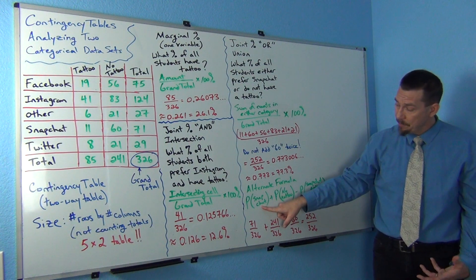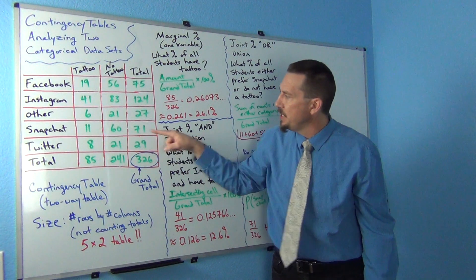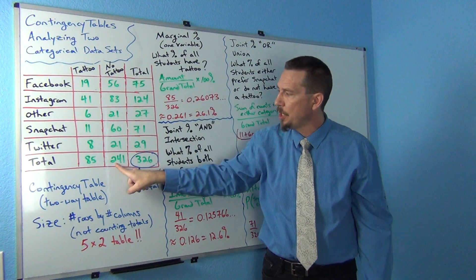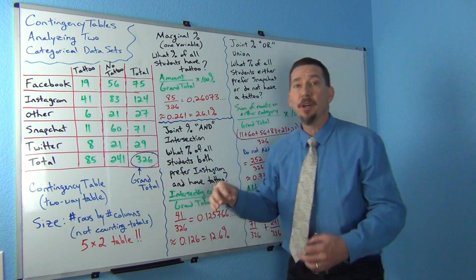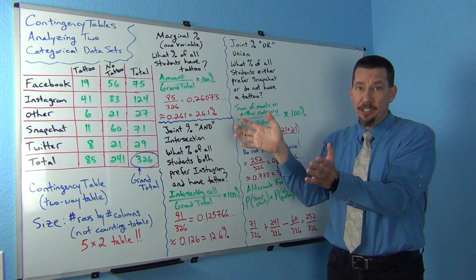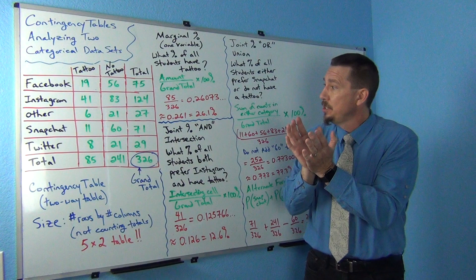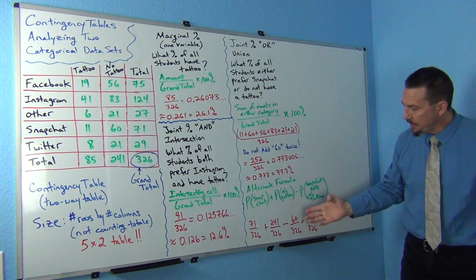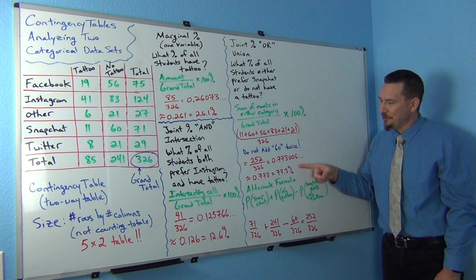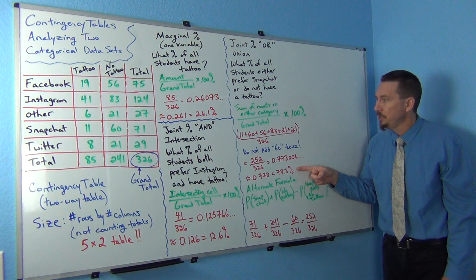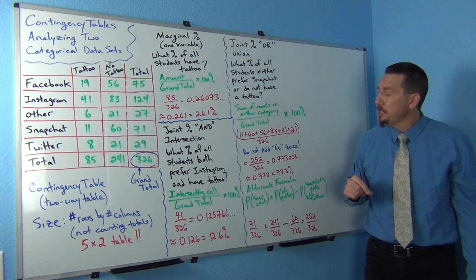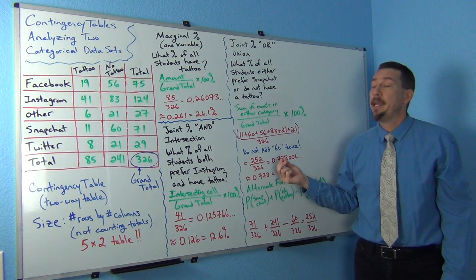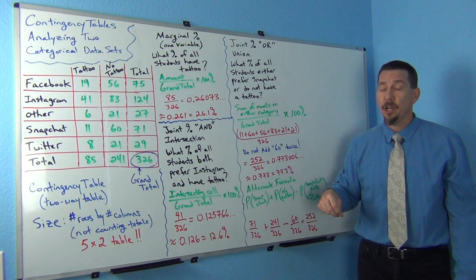The proportion for Snapchat is 71 out of 326. The proportion for no tattoo is 241 divided by 326. And we subtract out Snapchat and no tattoo — the intersecting percentage — which is 60 divided by 326. If you do that, you get 252 out of 326, or 77.3% — the same exact answer. We're going to continue in our next video and talk more about conditional percentages or conditional proportions when the total is not the grand total.